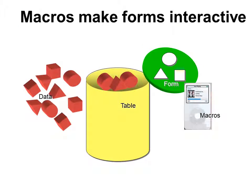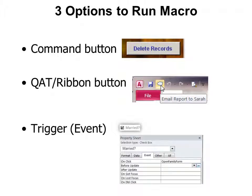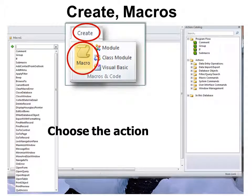Remember our macros — that makes our forms more interactive, and it's like a tape recorder. You can use it on a command button like I showed you earlier, or you can put it right here on the quick access toolbar. When I hover over this newly created button, I can see exactly what that macro is going to do. Or a trigger like an event — for example, if I check the married field, then another form opens up. In properties you would set the trigger to happen on click, and it would open up a form. You create macros under Create Macros and then choose the action you want it to do. If you don't see the action you want, look in the catalog and find it — it's a little different from the 2003 version.